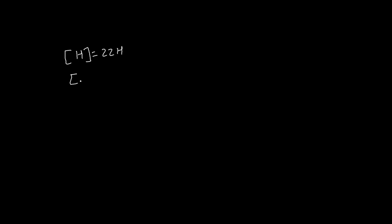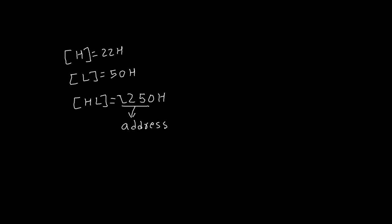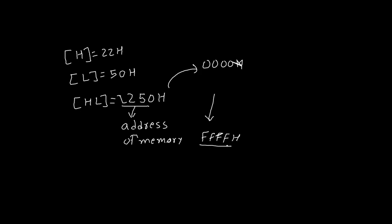To understand that, let's consider the content of H register — say 22H — and content of L register is 50H. So the content of HL pair will become 2250H. This 2250H will be an address of memory. Memory ranges from 0000H up to FFFFH, and somewhere in between this range we get 2250H. So 2250H is actually a memory address.